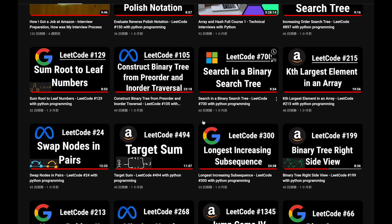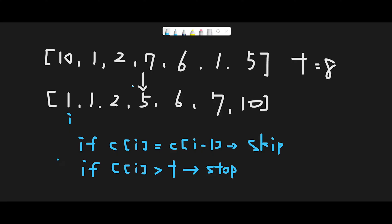Let me explain with this example: [10, 1, 2, 7, 6, 1, 5] and target is 8. There are several ways to solve this question, but the easiest way is to first sort the input array, so we get [1, 1, 2, 5, 6, 7, 10].